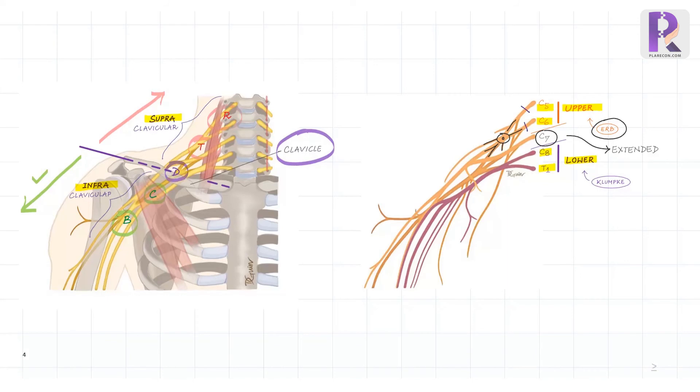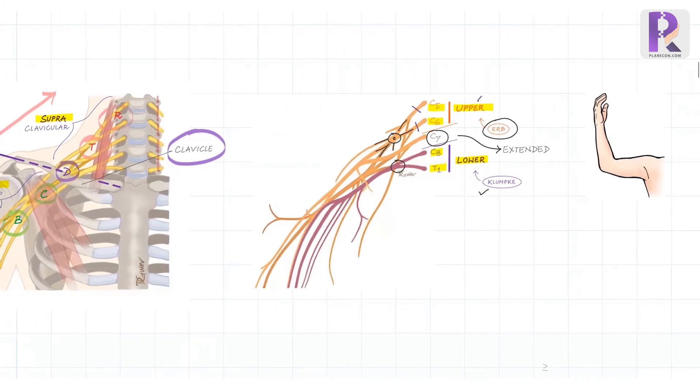Similarly, Klumpke's paralysis is an example of lower plexus involvement, where the injury is to the lower trunk. It's interesting to note that as we move from C5 to T1, the deficit pattern moves from the shoulder to the hand. So the upper plexus injury has more involvement of shoulder and elbow, whereas the lower more of wrist and hand.